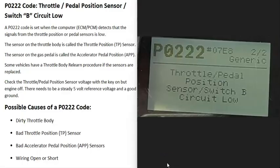Today I'm talking about a P0222 code — what it is and how you go about fixing it. A P0222 code is a throttle pedal position sensor switch B circuit low.